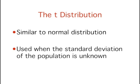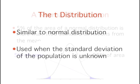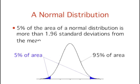We use the t-distribution when the standard deviation of the population is unknown. But first, a quick review of normal distributions. 5% of the area of a normal distribution is more than 1.96 standard deviations away from the mean. Therefore, 95% of the area is within 1.96 standard deviations of the mean.